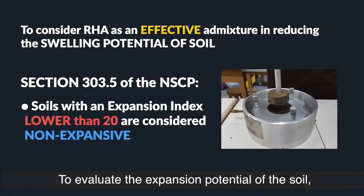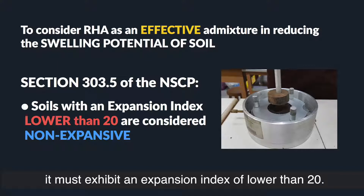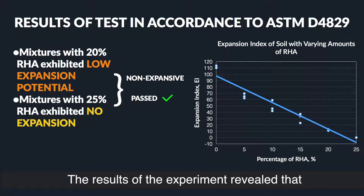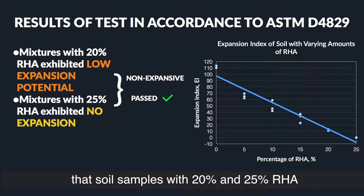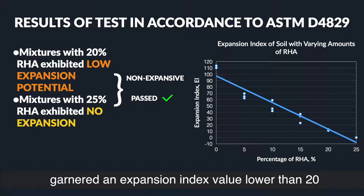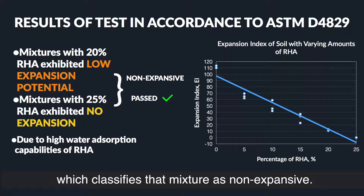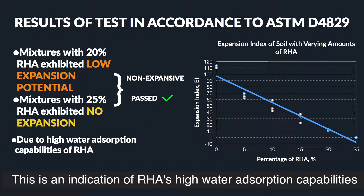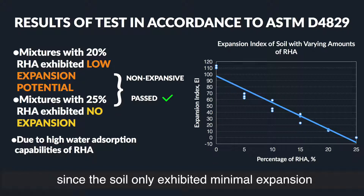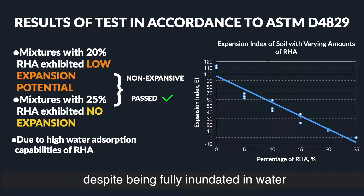To evaluate the expansion potential of the soil, the mixture must exhibit an expansion index lower than 20. The results of the experiment revealed that soil samples with 20% and 25% RHA garnered an expansion index value lower than 20, which classifies the mixture as non-expansive. This is an indication of RHA's high water absorption capabilities, since the soil exhibited only minimal expansion despite being fully inundated in water.